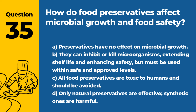Question 35. How do food preservatives affect microbial growth and food safety? a. Preservatives have no effect on microbial growth. b. They can inhibit or kill microorganisms, extending shelf life and enhancing safety, but must be used within safe and approved levels. c. All food preservatives are toxic to humans and should be avoided. d. Only natural preservatives are effective; synthetic ones are harmful. Answer: b. They can inhibit or kill microorganisms, extending shelf life and enhancing safety, but must be used within safe and approved levels. The judicious use of preservatives is key to food safety and quality.